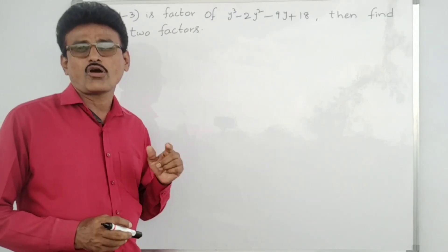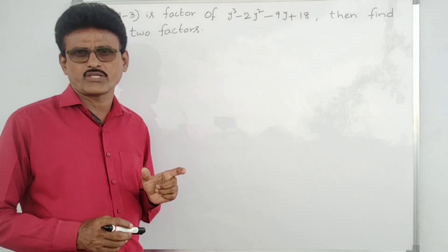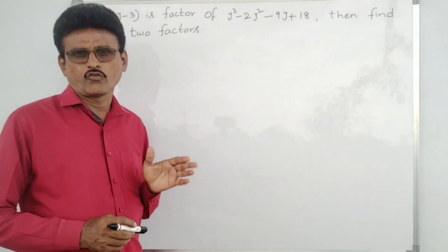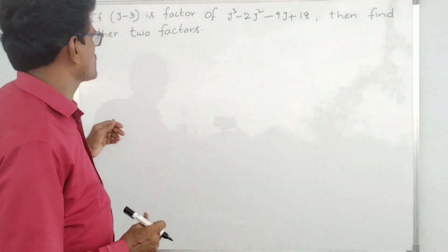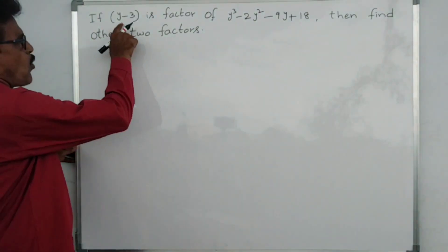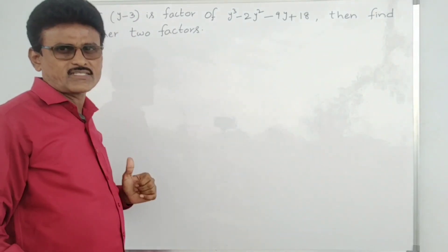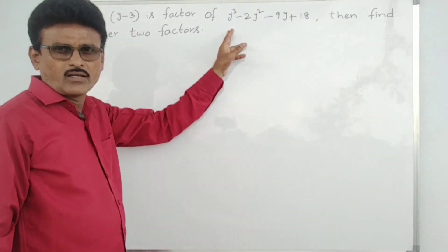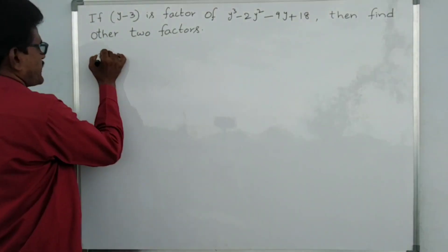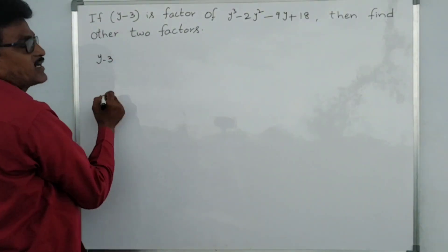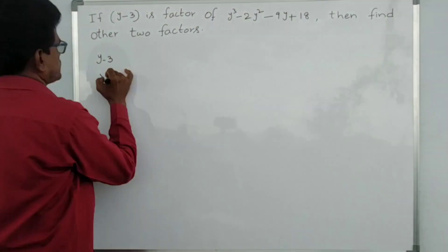Hi friends, this is my fifth video on polynomials. In this I am going to explain the long division method. If you follow this video completely, you can master this long division method. The problem states: if y minus 3 is a factor of this cubic polynomial, then find the other two factors. That factor means we will get remainder zero after division.